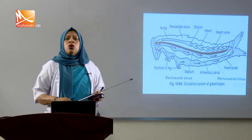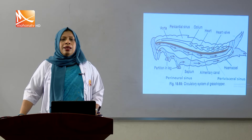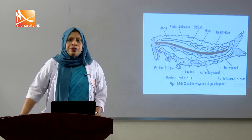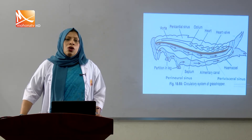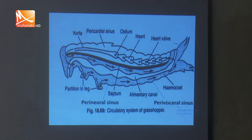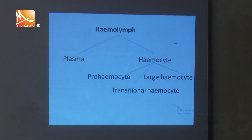The functions of hemocoel are: it holds hemolymph, it contains all the internal organs of the grasshopper body, and it transports nutrients and excretory products in the grasshopper. Now we will discuss hemolymph. Hemolymph is the blood of grasshopper, named so because it co-exists with lymph.